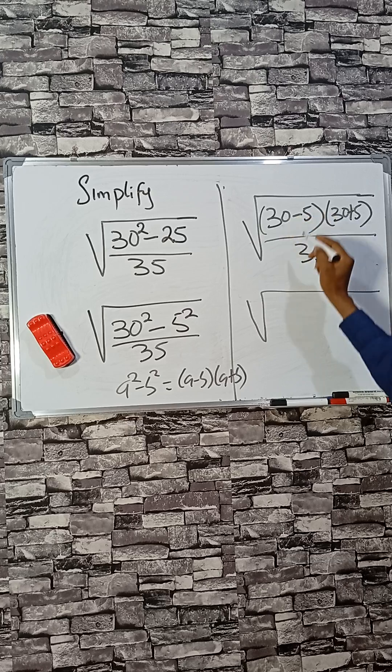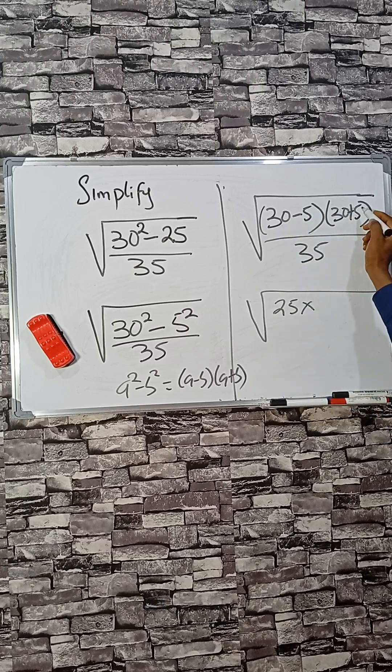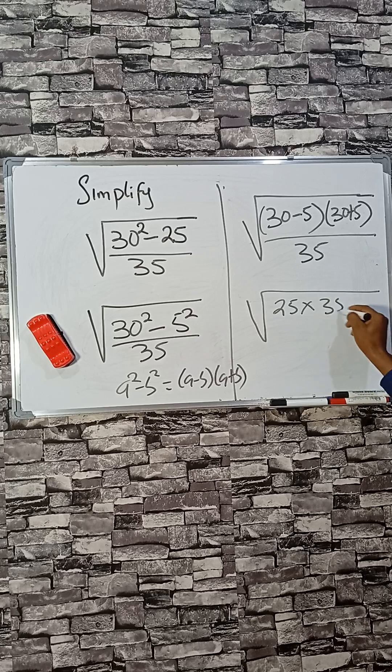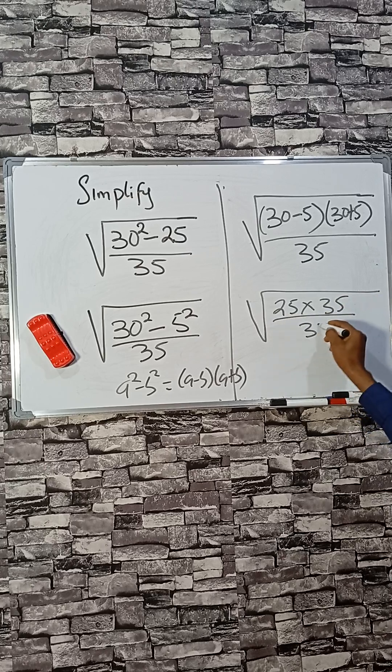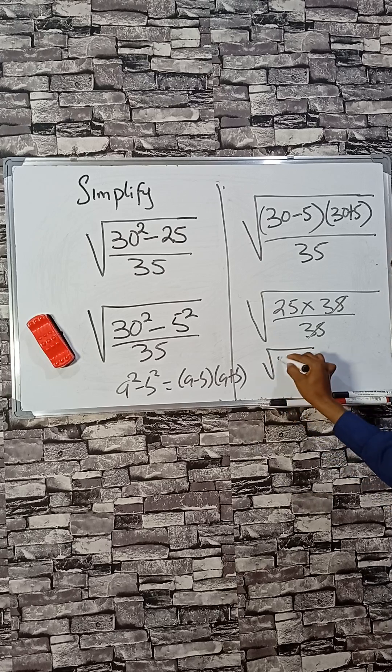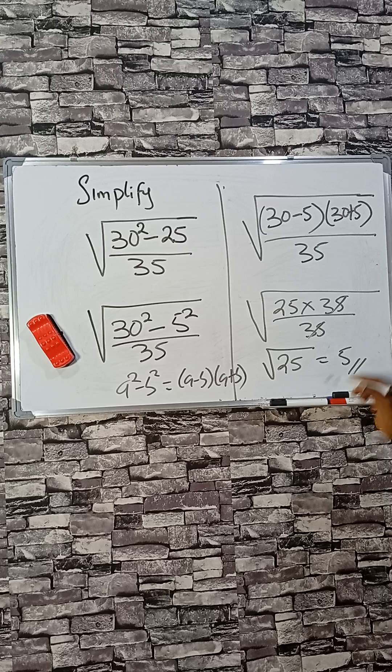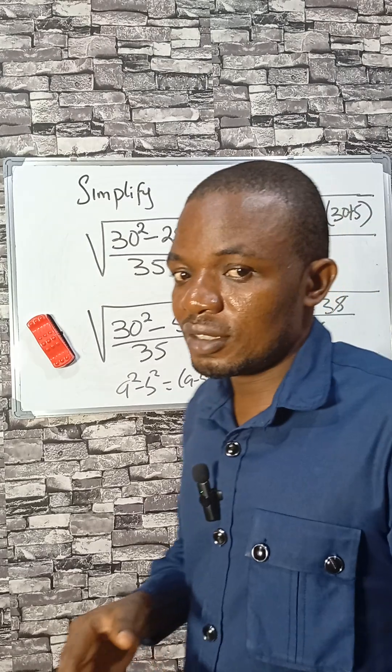The next step is to check. 30 minus 5 is 25, times 30 plus 5 is 35, divided by 35. This and this will go, giving us square root of 25, and 25 is what? 5. Very simple.